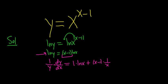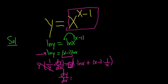So now we can multiply both sides by y. And so we get dy dx equals y, but we know what y is. It's x to the x minus 1.